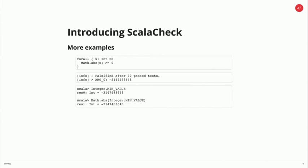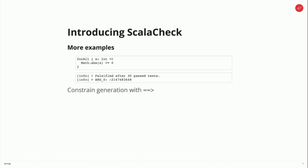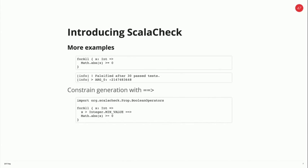There are a lot of ways we could solve this. One way could be that we've got the type signature of absolute wrong — perhaps it should return an option, and if you give it negative minimum, then it produces None. There are slightly more logical ways to fix this: we can constrain what ScalaCheck generates using this operator, which is called implication. We could say, as long as our value is greater than the minimum value, then run our test. Every time ScalaCheck generates a value that this predicate doesn't hold, it just skips it and moves on to the next. Now we see that our test passed again.